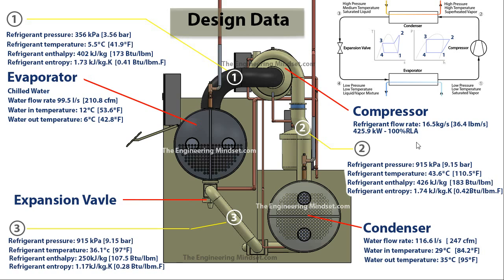At point three, located just after the condenser before the expansion valve, the pressure remains the same at 915 kilopascals. The temperature has reduced from 43.6°C down to 36.1°C, and there is a change in both enthalpy and entropy. At point three, the refrigerant temperature is 36.1°C (97°F), the refrigerant enthalpy is 250 kilojoules per kilogram (107.5 BTU per pound), and the entropy is 1.17 kilojoules per kilogram per kelvin (0.28 BTU per pound per °F).